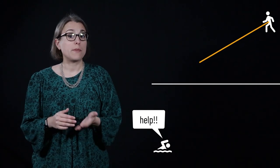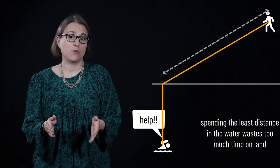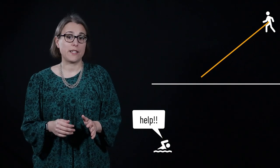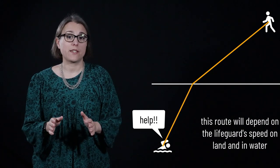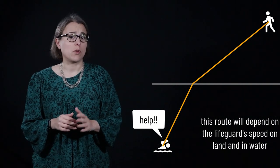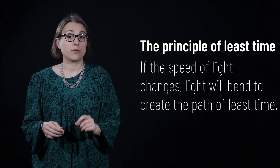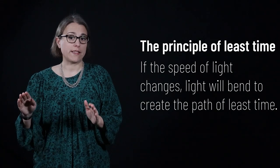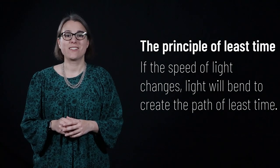Alternatively, she could minimize the distance in the water, but this would cause her to spend too much time on land, which is also not optimal. Depending on her exact speeds on land and in water, her path of least time will be an optimization balancing more time on the beach and less time in the water. When the speed of light changes throughout its journey, light will bend in order to create the path of least time — as we'll see when we discuss refraction.